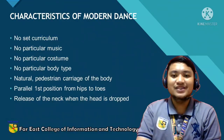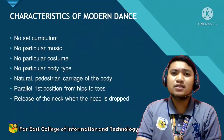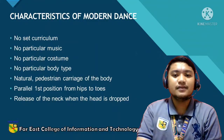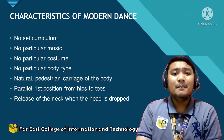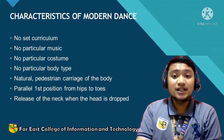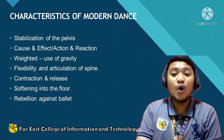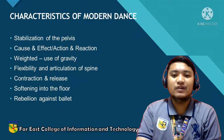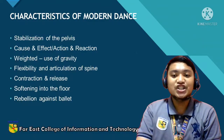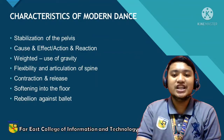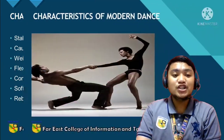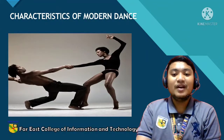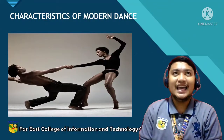Here are the characteristics of modern dance: no set curriculum, no particular music, no particular costume, no particular body style, natural pedestrian use of the body, parallel position of the hips to toe, release of the neck when the head is dropped, stabilization of the pelvis, cause and effect, action and reaction, weighted use of gravity, flexibility and articulation of the spine, contraction and release, softness into the floor, and rebellion against ballet.